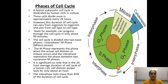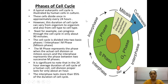Human cells in culture media divide once in approximately every 24 hours. However, this duration of the cell cycle may vary from organism to organism and from one cell type to another. For example, yeast can progress through the cell cycle in only about 90 minutes. The cell cycle is divided into two basic phases: one is the interphase, which takes up the maximum time, and the other is the M phase, which is the division phase.